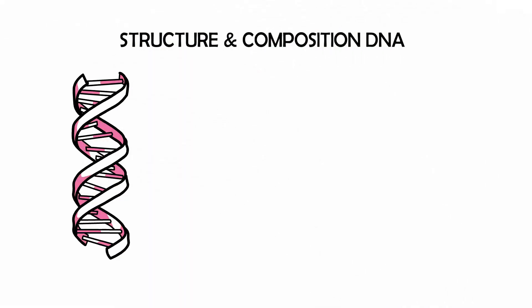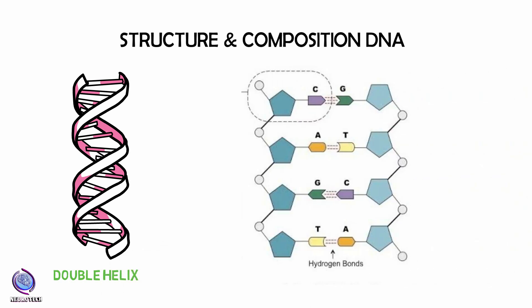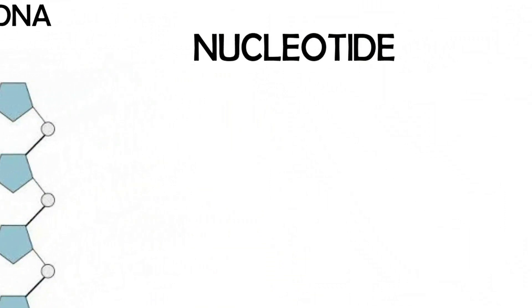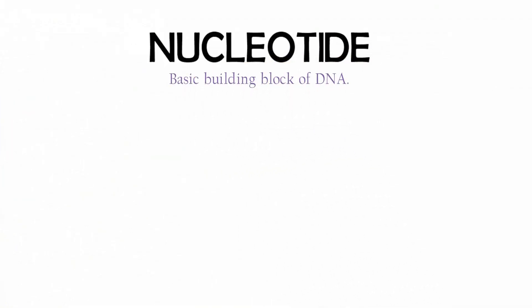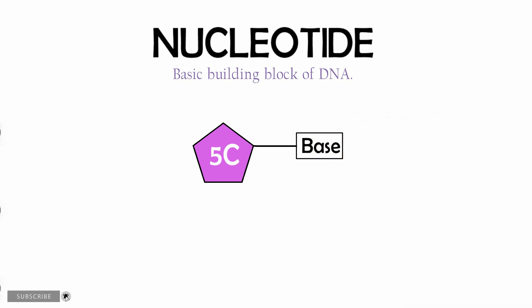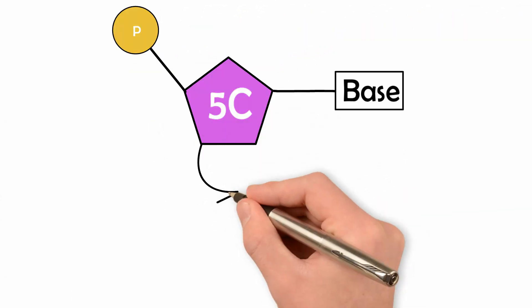DNA is a double helix molecule. The DNA molecule is composed of two polynucleotide chains, which are composed of monomeric units called nucleotides. The nucleotide is the basic building block of DNA and the monomer of nucleic acid. Each nucleotide is further made up of three major molecules: a 5-carbon deoxyribose sugar, a phosphate group, and nitrogenous bases.